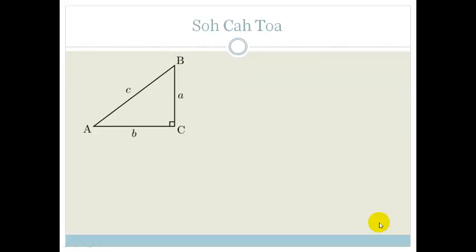First, if you have a right-angle triangle, we can use the acronym SOHCAHTOA. SOHCAHTOA stands for: sine of theta is opposite over hypotenuse, cos theta is adjacent over hypotenuse, and tan theta is opposite over adjacent. Remember this.